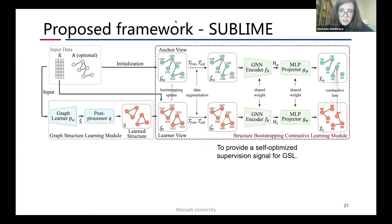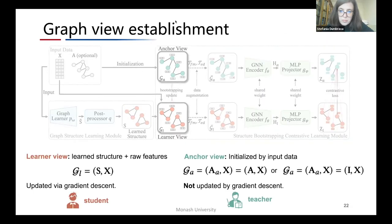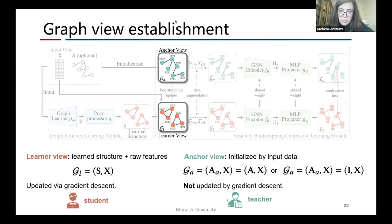After acquiring the learned structure S, I am going to introduce the Structural Bootstrapping Contrastive Learning module that provides supervision signals for structural learning. In this module, we first attach two different views for contrastive learning. The Learned View GL is constructed from the learned structure and the original feature. This view can be updated via gradient descent during training process. The Anchor View GA is to provide guidance for structural learning, which is initialized by input data. It should be noticed that this view is not updated by gradient, but another bootstrapping strategy which we will introduce later. From a teacher-student perspective, the Learned View can be viewed as a student to discover a different possible optimal structure, while the Anchor View serves as a teacher that guides the student's learning.